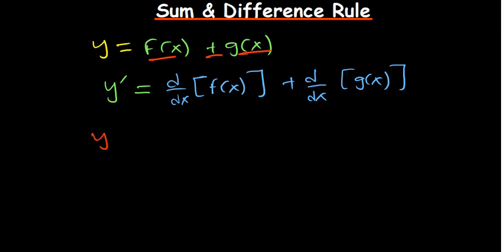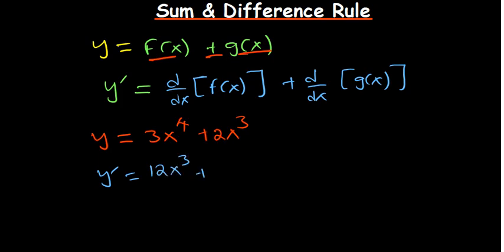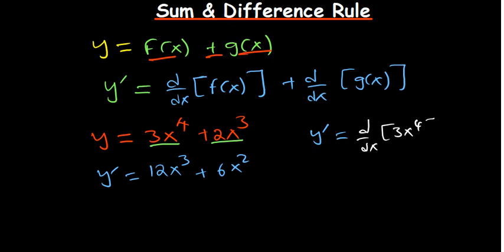Maybe it makes more sense with an example. If you have y equal to 3x to the power 4 plus 2x to the power 3, y prime worked out by the power rule will be 12x to the power 3 plus 6x squared. According to the sum rule, since these can be considered separate functions, y prime is also equal to the derivative of 3x to the power 4 plus the derivative of 2x to the power 3. Even if you do them separately and add them, you still get the same result.